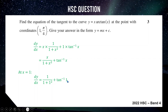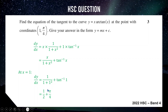Substituting x equals 1 into the derivative: we get 1 over 1 plus 1 squared plus arc tan 1. Arc tan 1 is the angle whose tangent is 1, which is 45 degrees or π/4 radians. The fraction 1 over 1 plus 1 equals one half. So the gradient of the tangent is 1/2 plus π/4, which we express as a single fraction: 2 over 4 plus π over 4 equals (2 plus π) over 4.